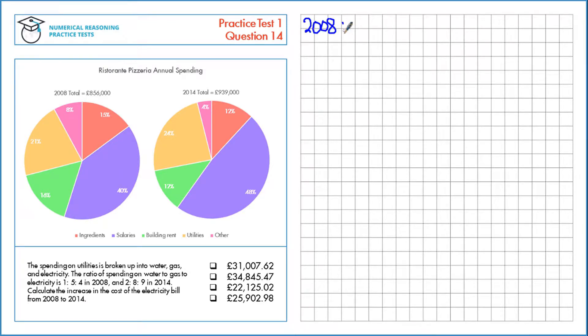Let's figure out the cost in 2008. First let's calculate the money that was spent on utilities in 2008. Utilities is this region, 21%, so that's 0.21 multiplied by the total, 856,000, which is £179,760.